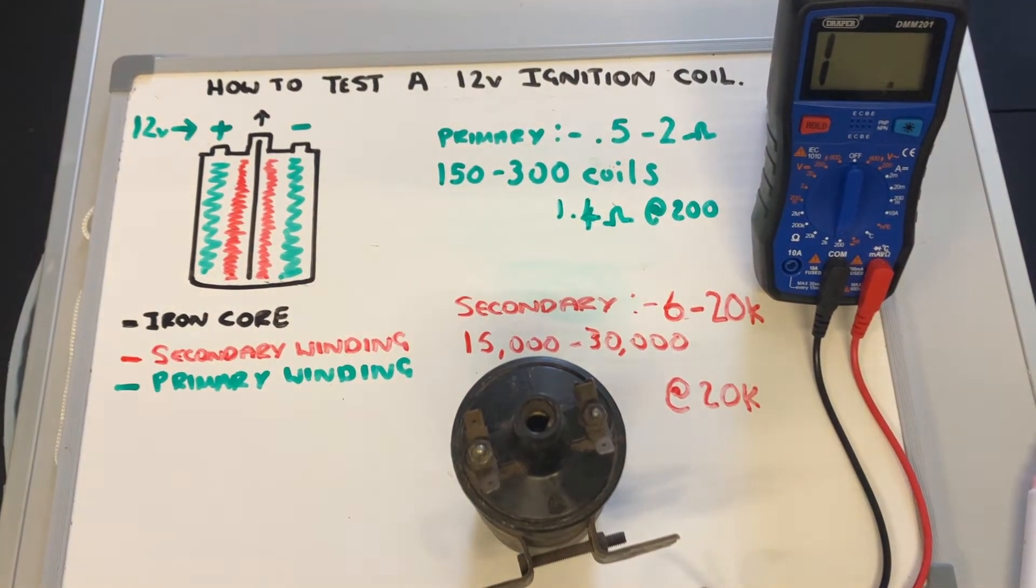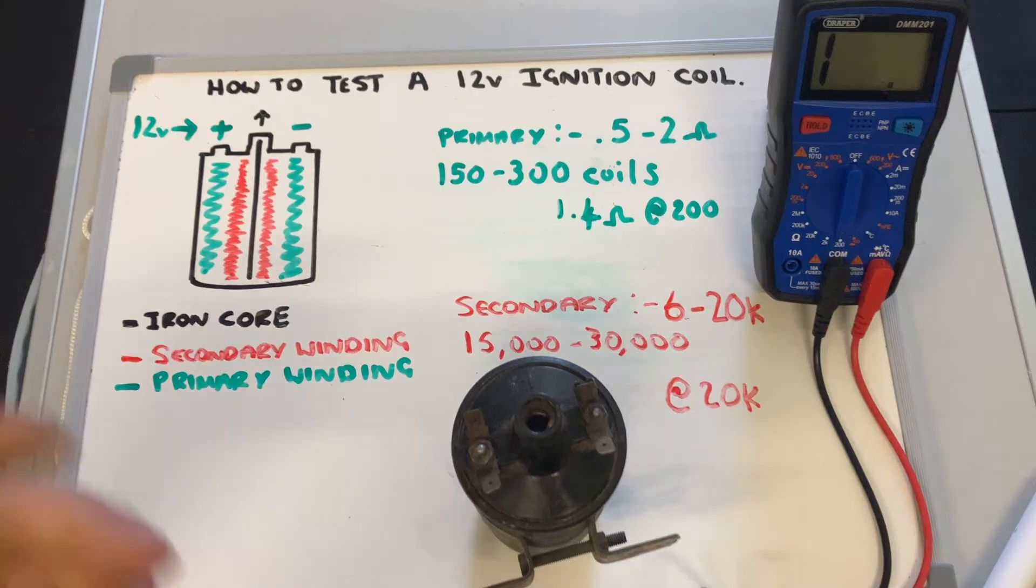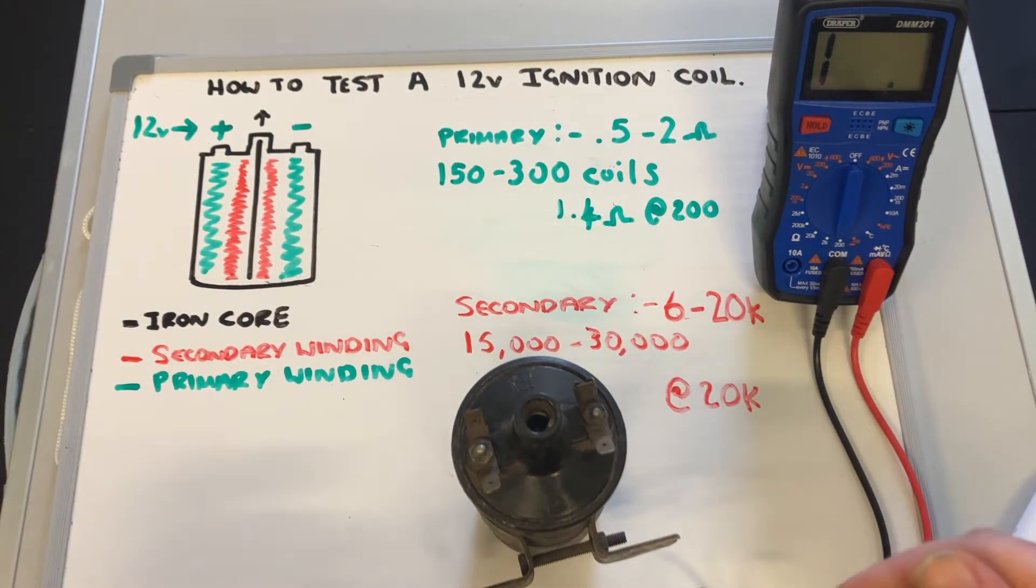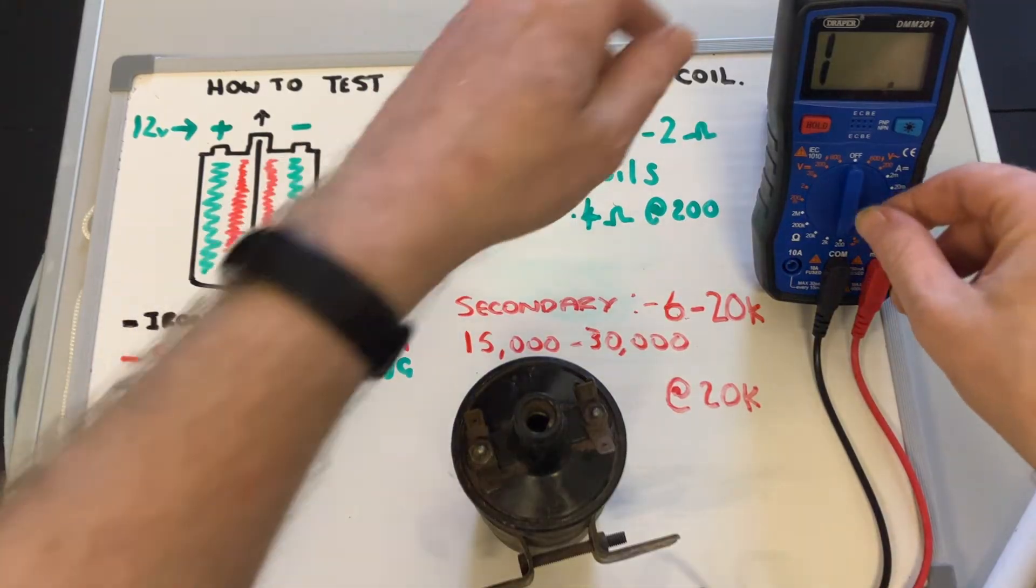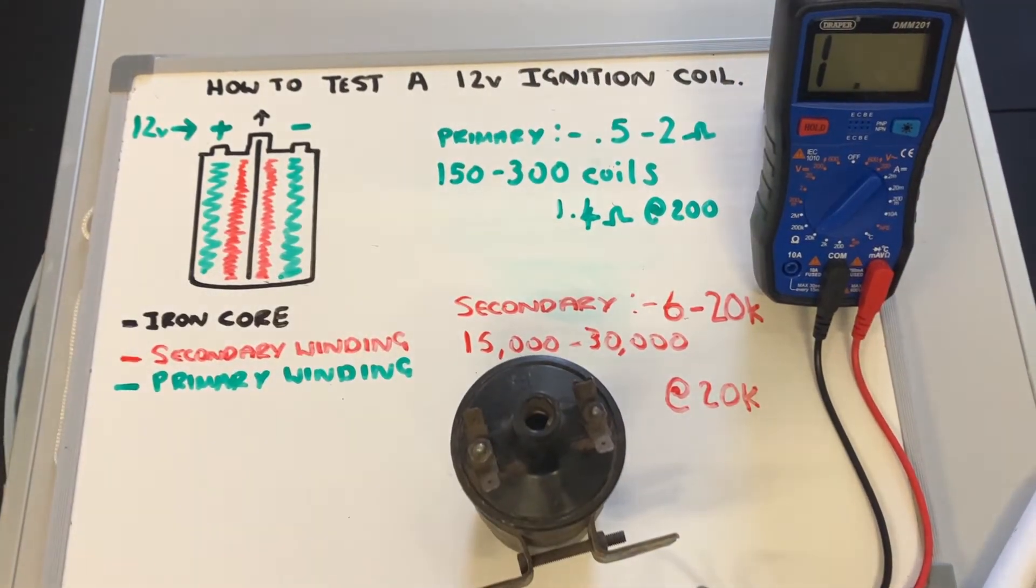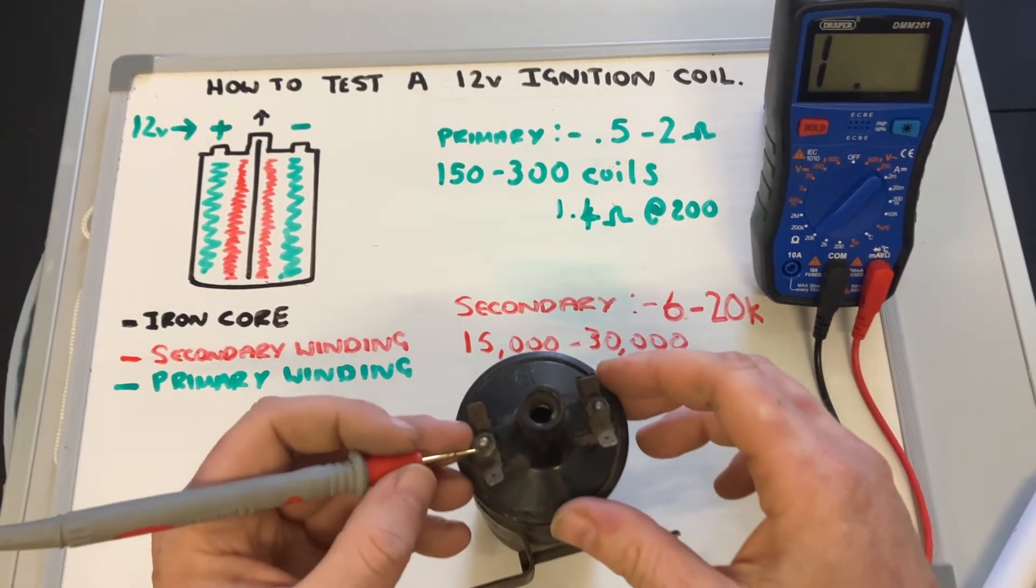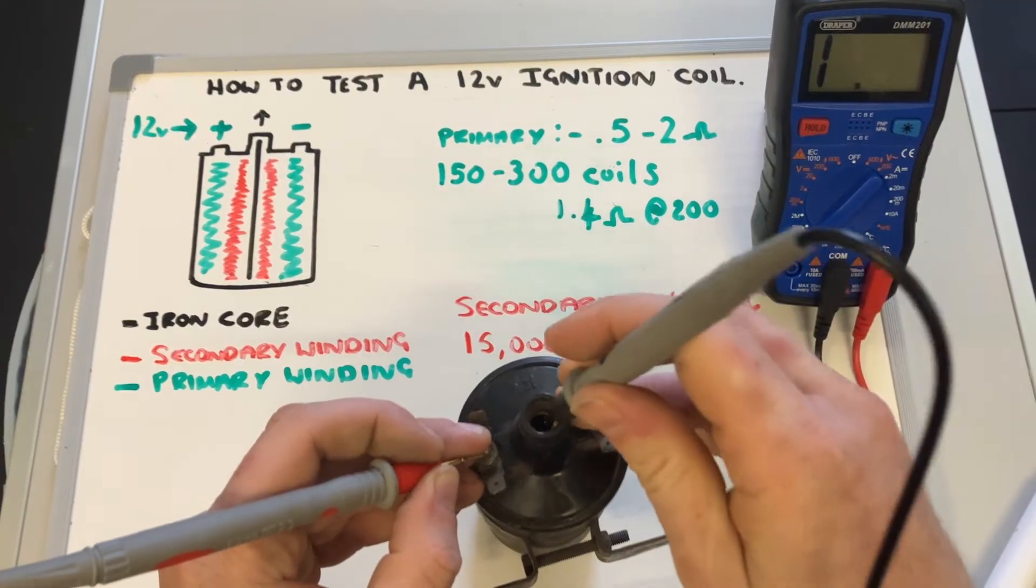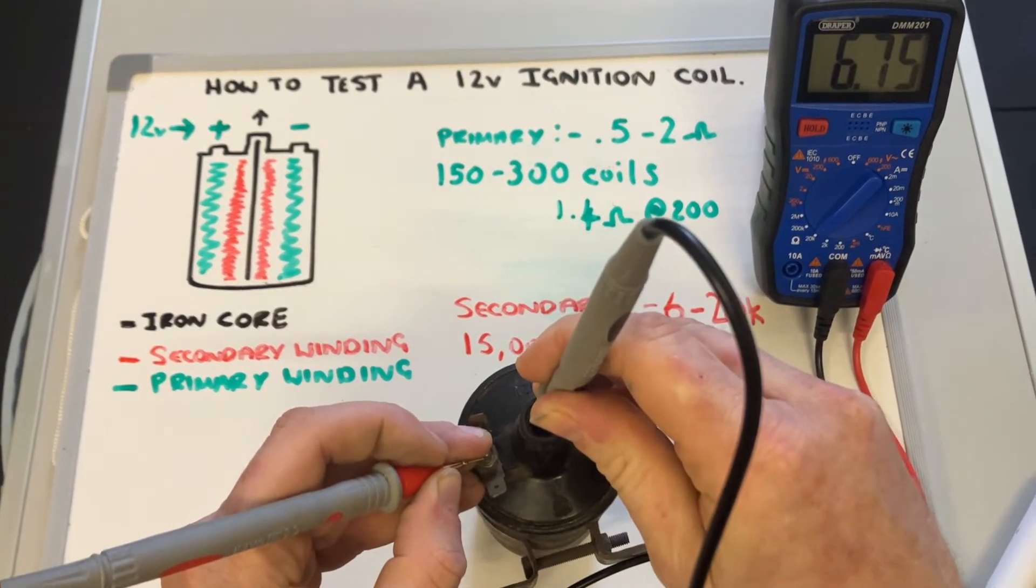Because the windings are a lot more compact in the secondary, you're expecting a lot higher resistance because you're going through a lot more copper. So we need to raise it, in this case, to 20,000, so 20k ohms. And then we need to go from the positive side of the ignition coil as before, but this time to the output here where the secondary would be exiting from.